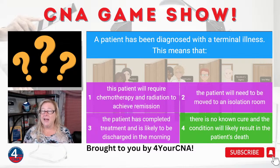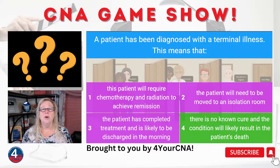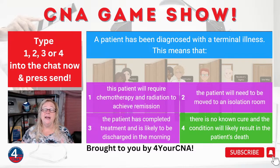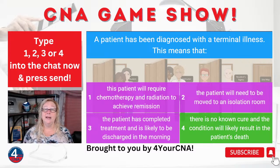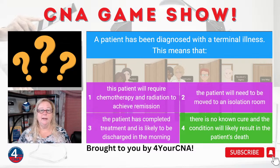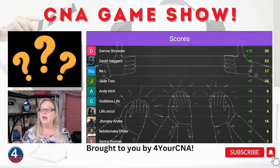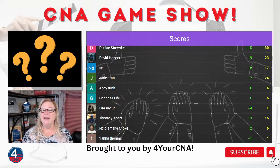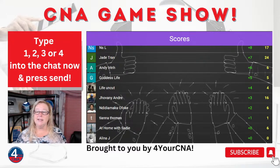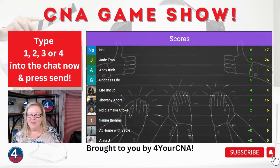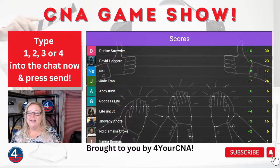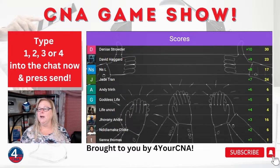The correct answer is number four. Terminal illness means there is no known cure, so there's nothing left to really offer this patient other than comfort care. Terminally ill means the patient is likely going to die from this condition. In medicine, this is really hard to swallow — we want to believe everything can be fixed, but unfortunately it can't. There are conditions and injuries too advanced for our medical system to do anything about. Denise, David, NS, Jane, and Andy took our top five.